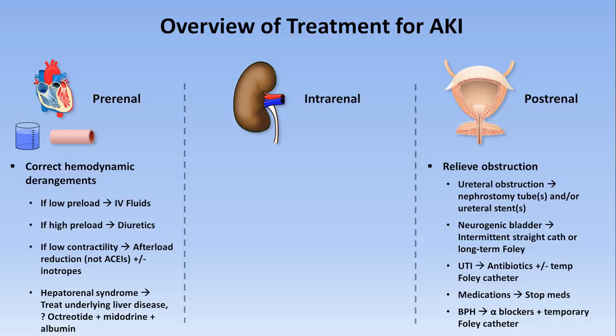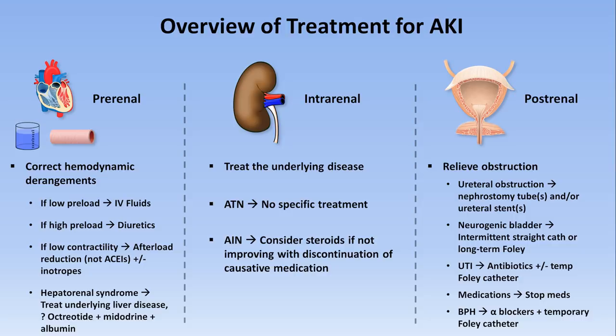Treating intrarenal etiologies of AKI is the most challenging of the three categories, because for most cases there is no kidney-specific treatment. Most are best addressed by treating the underlying disease. In the most common cause, ATN, although a number of direct interventions have been studied, none have been shown to be helpful — so the only thing to do is to avoid further insult. The one possible exception is AIN, or acute interstitial nephritis, where steroids such as prednisone can be considered if renal function fails to improve after discontinuation of the causative medication. However, studies of this intervention are small, conflicting, and do not include any randomized controlled trials.